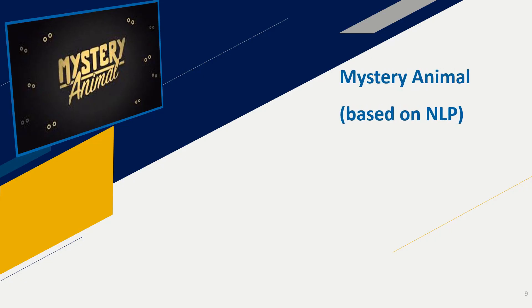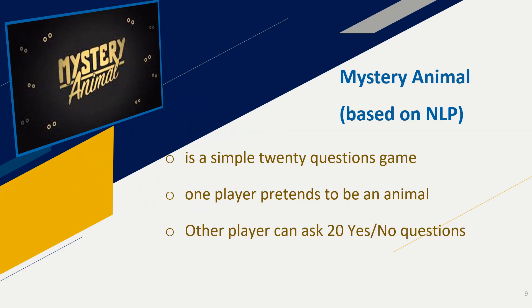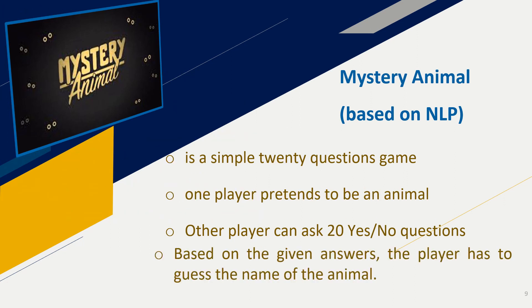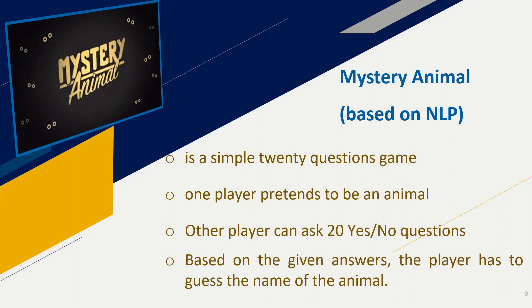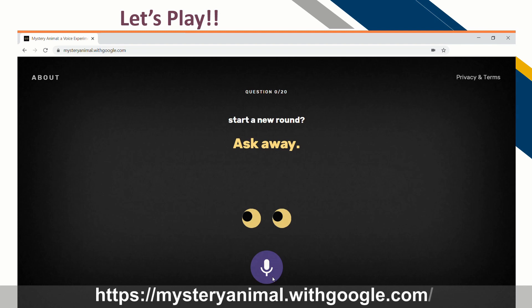The second game we will be playing is Mystery Animal, which is based on Natural Language Processing. This is a very simple game in which you ask 20 questions and one player pretends to be the animal — in our case, the machine will be pretending to be the animal. We will be asking 20 yes or no questions to the machine, and based on the answers, we have to guess the name of the animal. The URL is mysteryanimal.withgoogle.com.